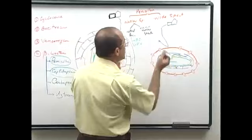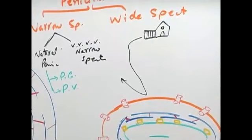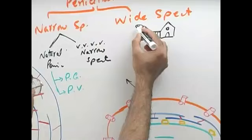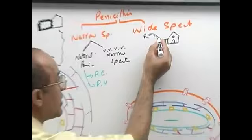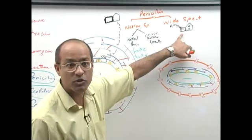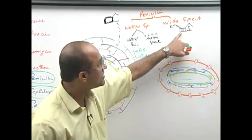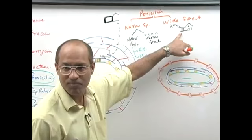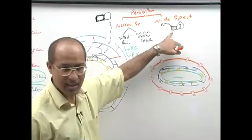Penicillin G and penicillin V were originally derived from a special mold, discovered by Alexander Fleming. The penicillin structure is like a big ring with one small ring — the small ring is the beta-lactam ring — and on the side you can attach a special R group. This is the basic structure; the most important part is the beta-lactam ring, which attacks the penicillin binding protein.